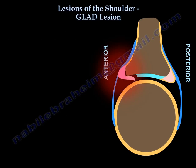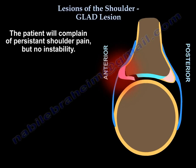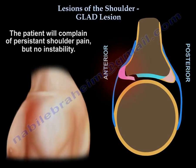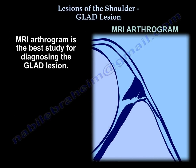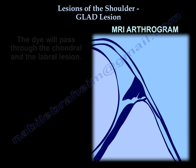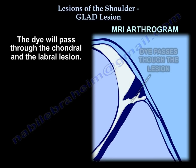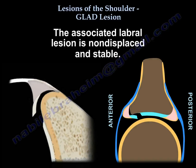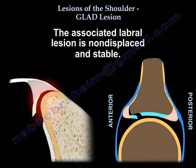The patient will complain of persistent shoulder pain but no instability. The best study to show the lesion is an MRI arthrogram. The dye will pass through the chondral and labral lesion. The associated labral lesion is non-displaced — it is a stable lesion.